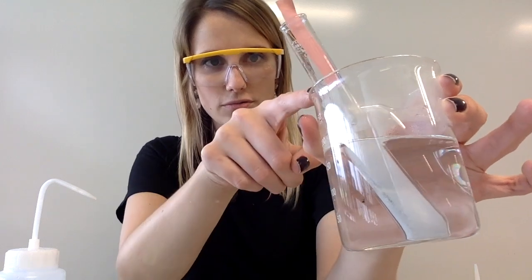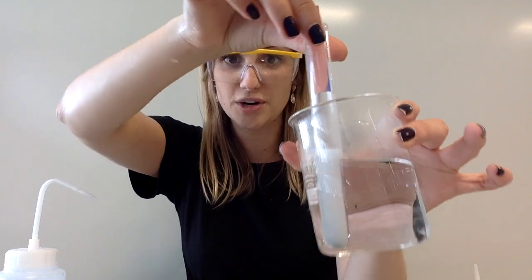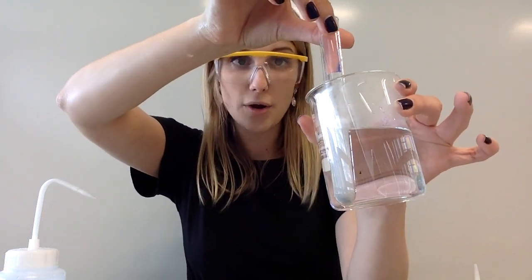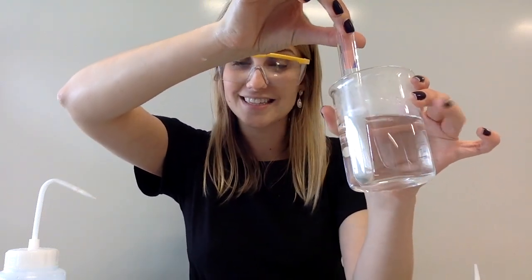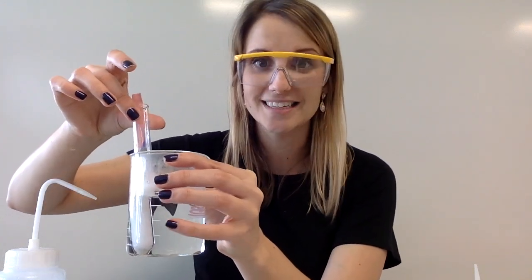Now what you can see is I'm already starting to get the blue color, which suggests that ammonia is being generated in this solution and therefore that there must have been nitrates there to start with.